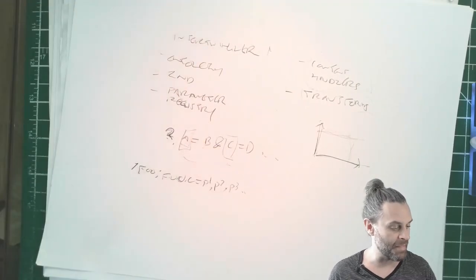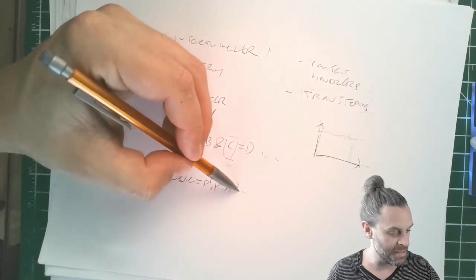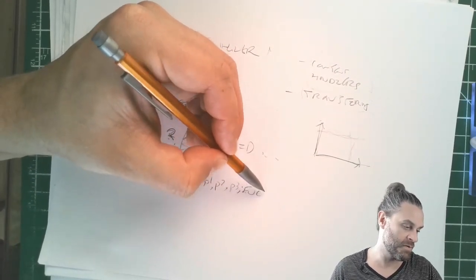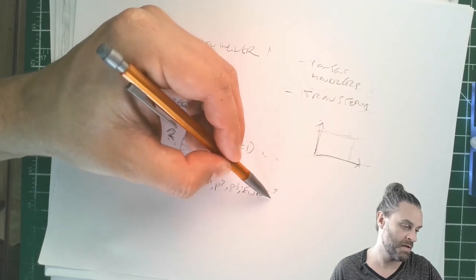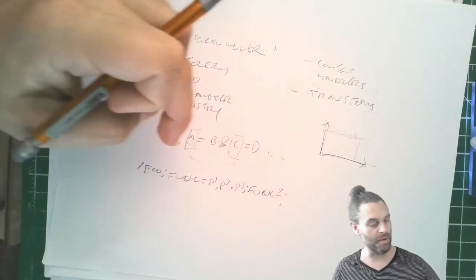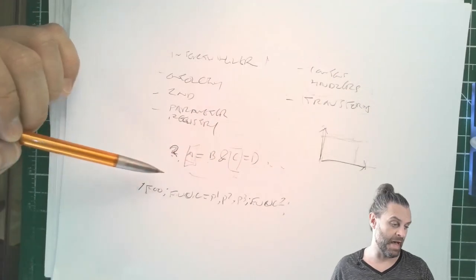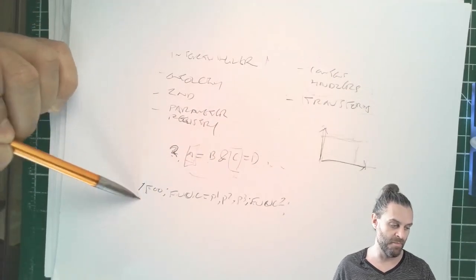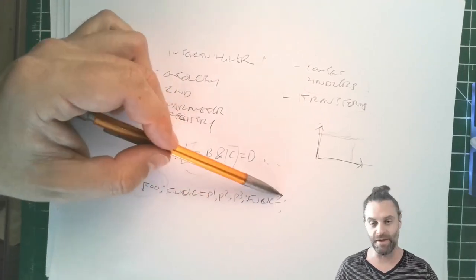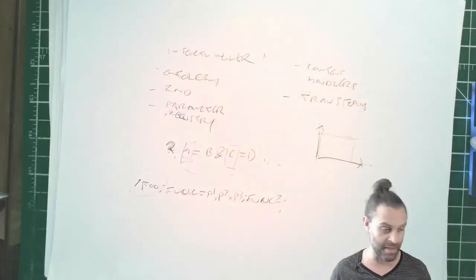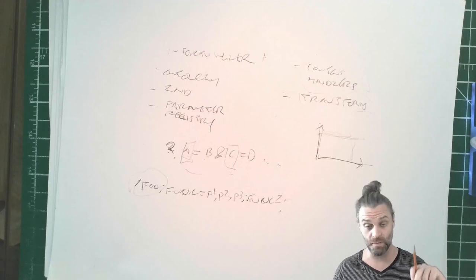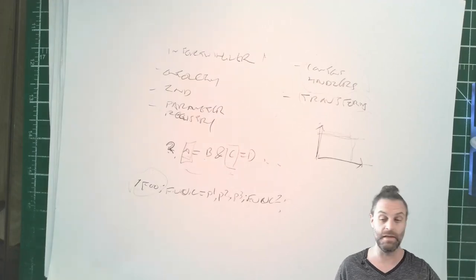And the cool thing about this representation is that you can tack on another semicolon, and then you could have func2, and you can just keep going. And so the idea is this representation says take the resource slash foo, apply func to it with these parameters, and then apply func2 to it, and then apply funcn to it. And you've got this one-to-one relationship between the URI and the representation.